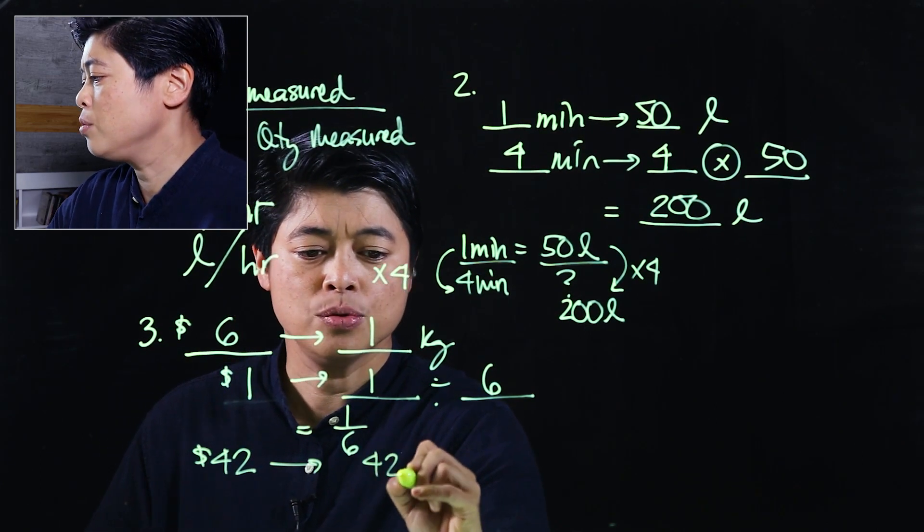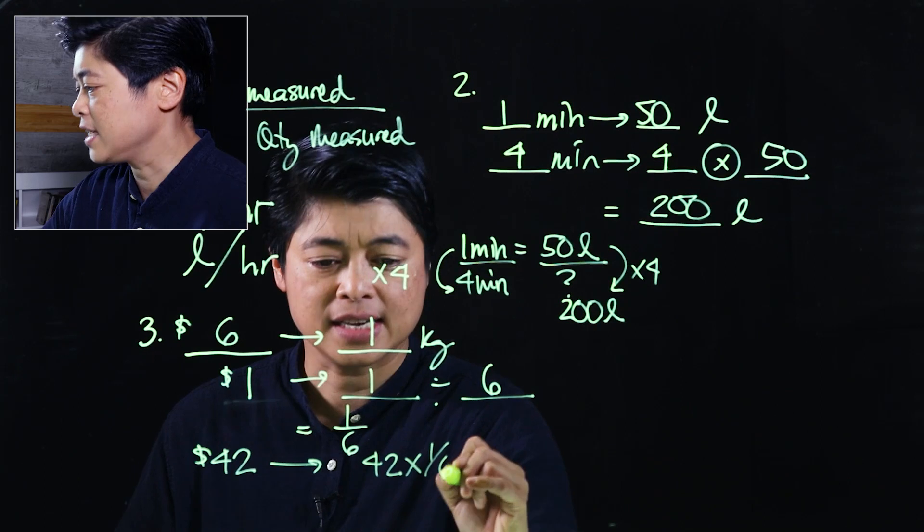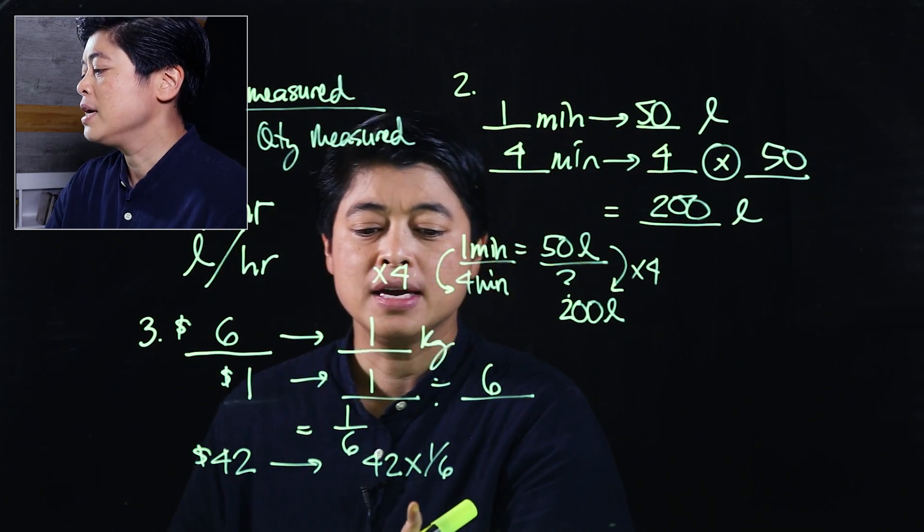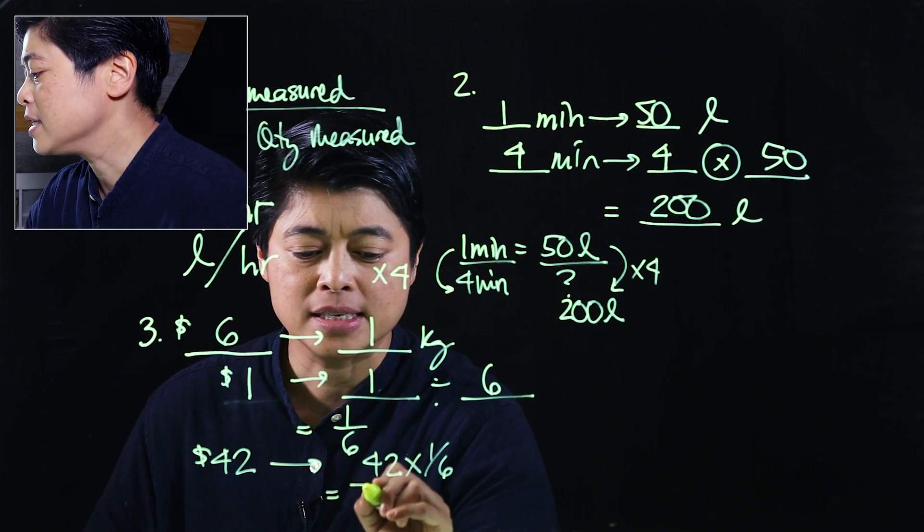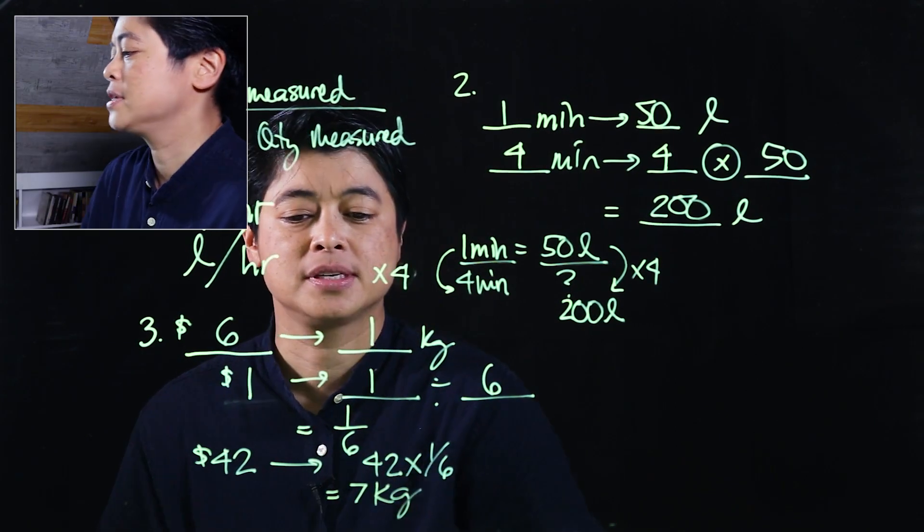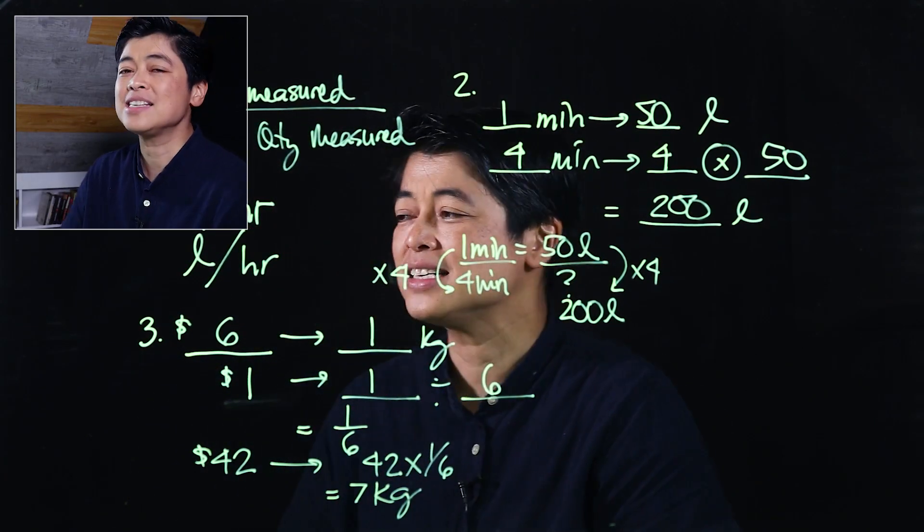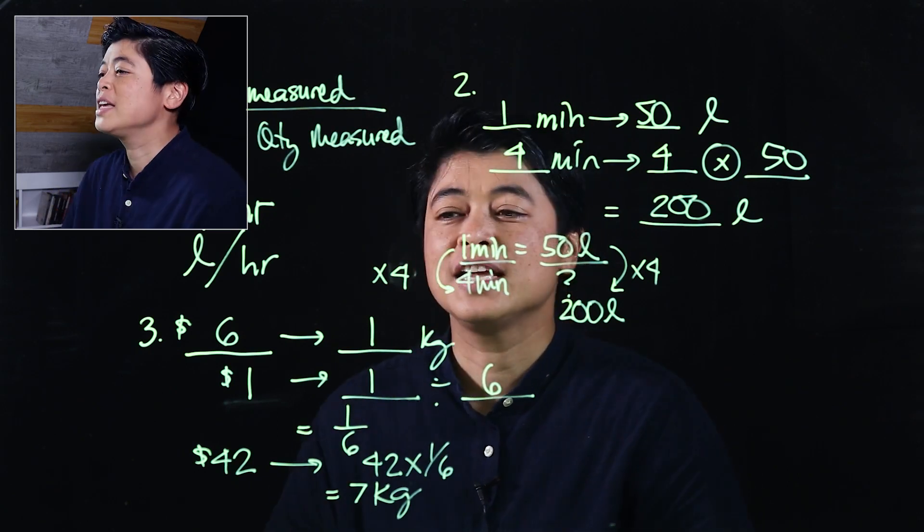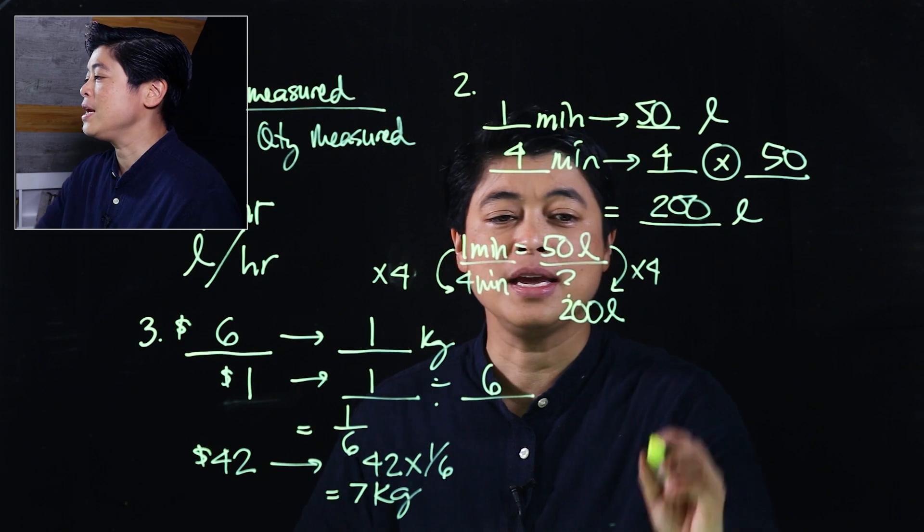Then after that, it says that 42 dollars is 42 is 42 times one sixth. So when I take one sixth of 42, that means that should be 37 kilograms. So again, that's the book's approach—it's quite cumbersome.